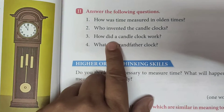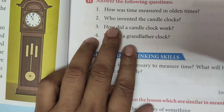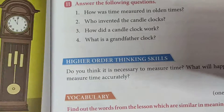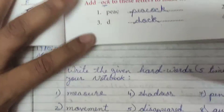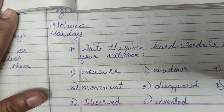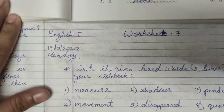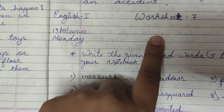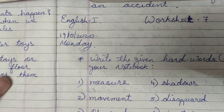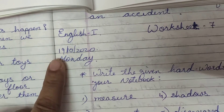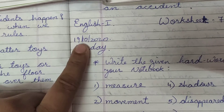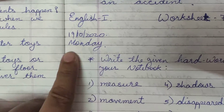The question answers are pending, so the question answers are written in red letters. Alright children, first of all you have to complete the hard words in your notebook. This is our worksheet number 7, chapter number 7 — What is the Time? English 1. Today's date — don't forget to write the date: 19-10-2020, Monday.